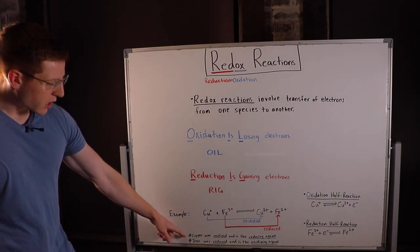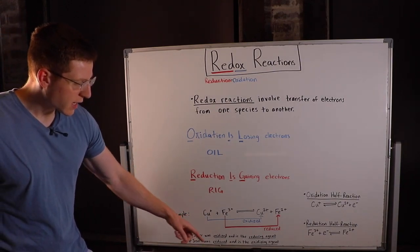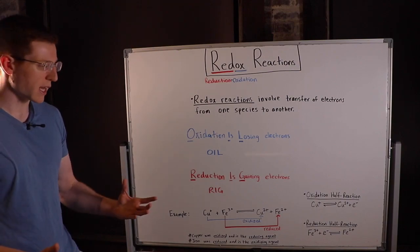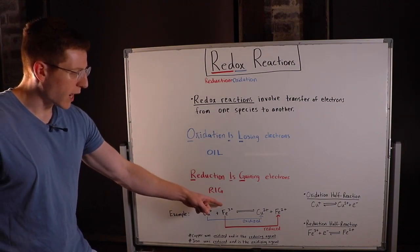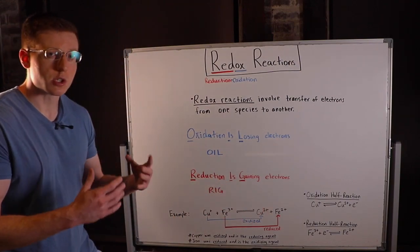What we can say here is that copper was oxidized and it is actually the reducing agent because it allowed for iron to be reduced. It reduced the iron.